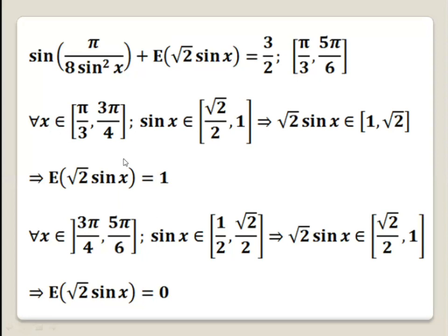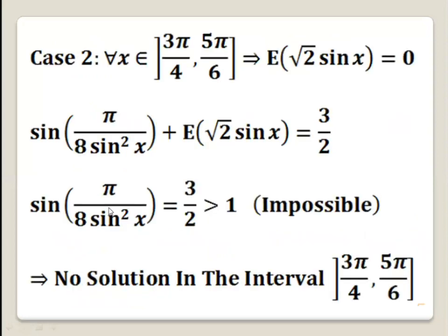Now we can discuss the two cases. We will begin with the second case because it's easier. For every x in this interval, the integer part of square root 2 times sine x equals 0. Substituting 0 into the equation, it becomes sine of pi over 8 sine squared x equals 3 over 2, which is greater than 1. Since the equation sine(alpha) = 3/2 is impossible — sine must be between minus 1 and 1 — we don't have any solution in this interval.